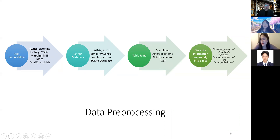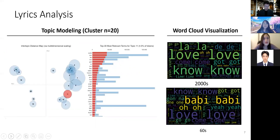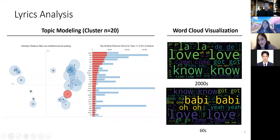Now I'm going to talk about lyric analysis. First, we performed topic modeling. The number of clusters is 20, and as you can see, all the topics are very well defined. In cluster 11, you can see that it talks about religion with words like Lord, Heaven, Soul, Belief, Angel, and Jesus. For word cloud visualization, we compare 2000s and 60s lyrics. In the 2000s, it's more party vibes with words like la la, oh oh. But in the 60s, it's more focused on love, with the word baby used the most.